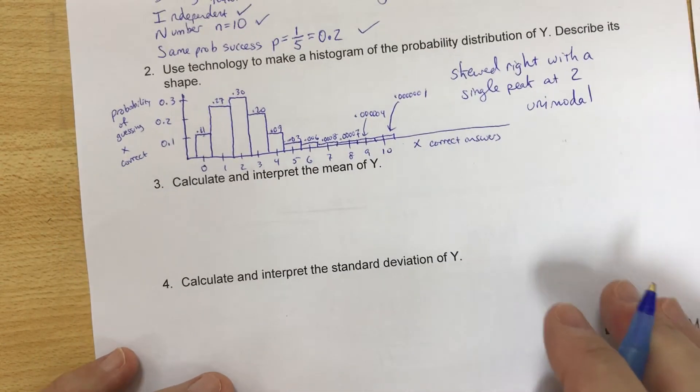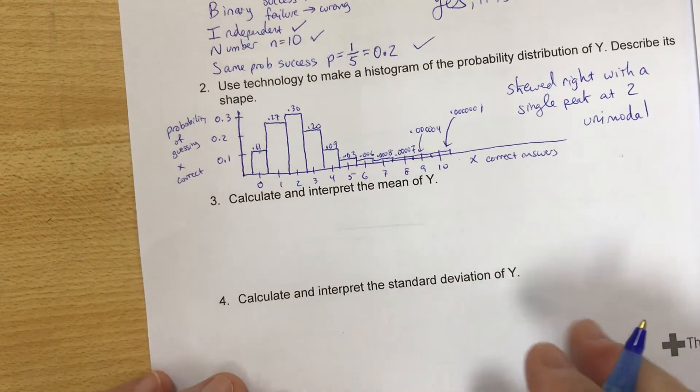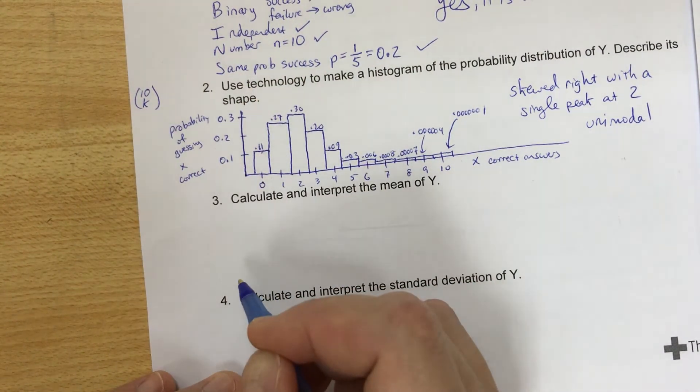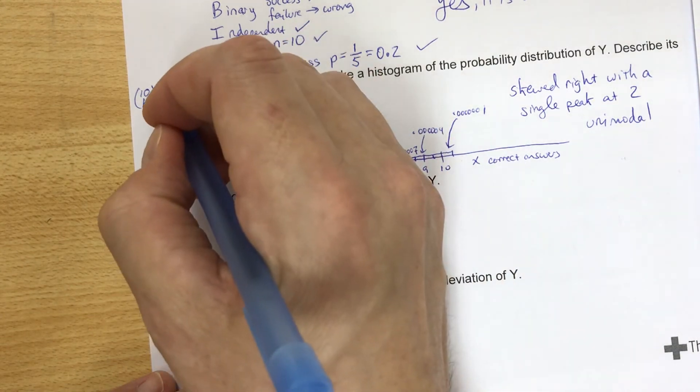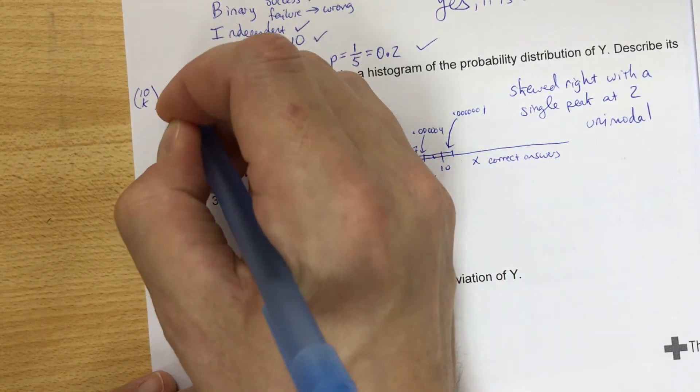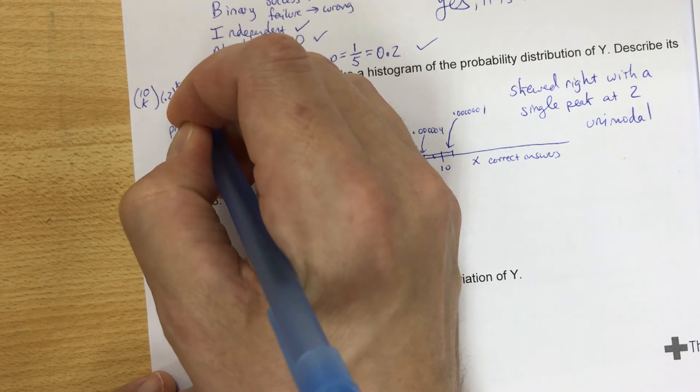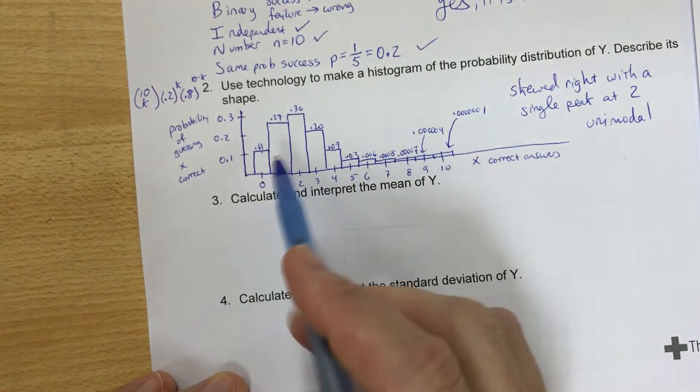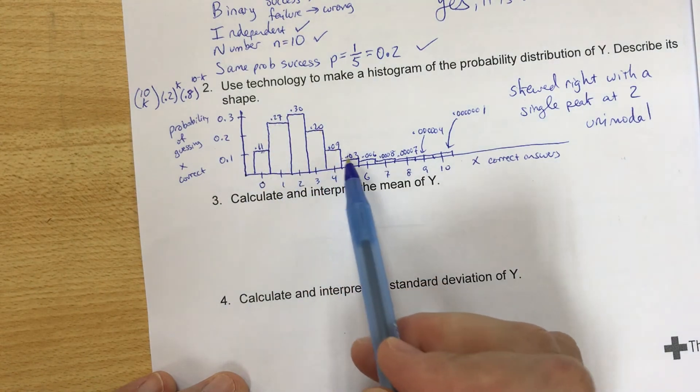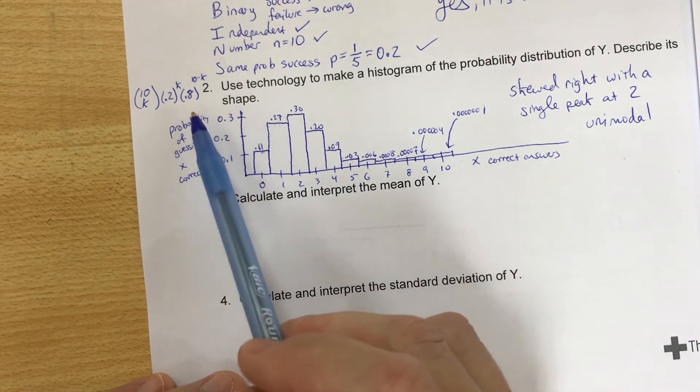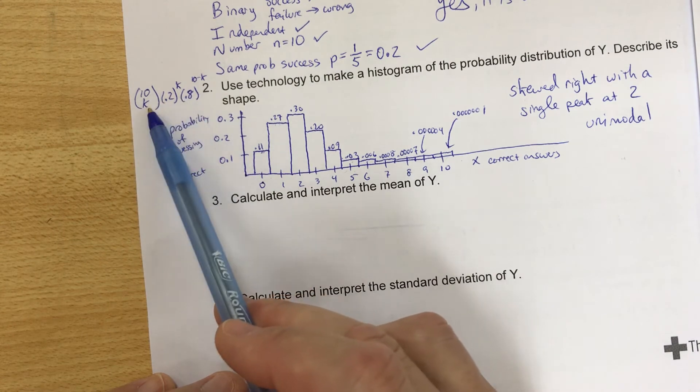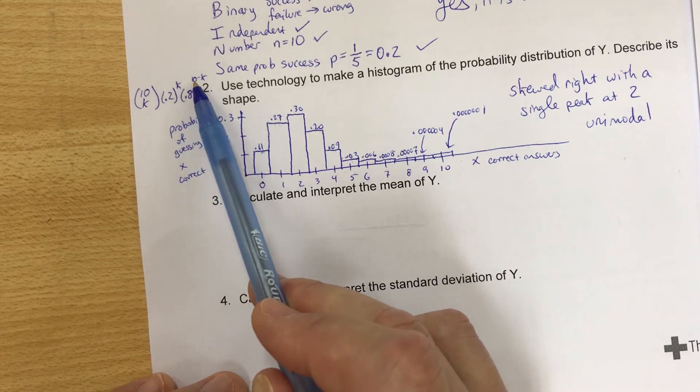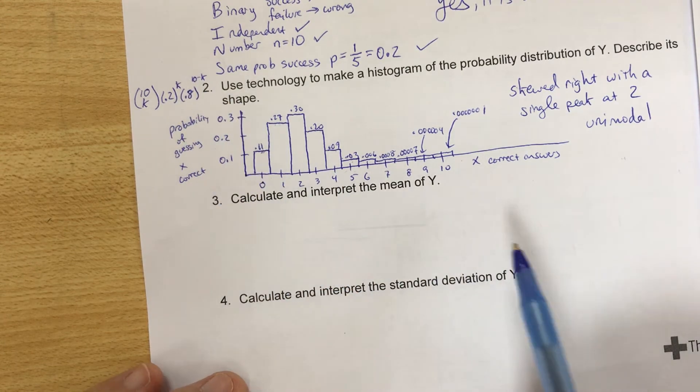Now the equation that I was using for this was out of 10 questions, we're going to choose k correctly. And then it's 0.2. That's the probability of success raised to the k. One minus that is 0.8 raised to the 10 minus k. So the way that I came up with my probabilities here, I did binomial PDF of guessing. And what I did was I started 0 and 10, and then 1 and 9, 2 and 8. And I just kept doing that.